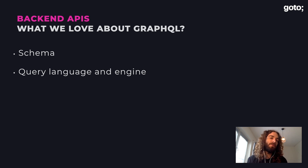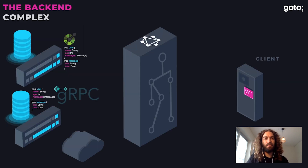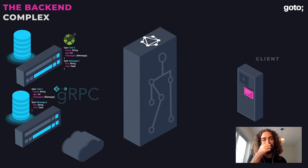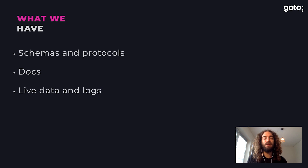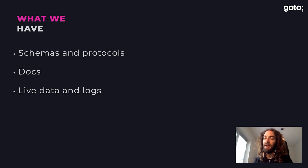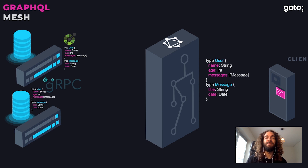We usually work with enterprise companies that have a lot of existing infrastructure — services already running their own protocols like OpenAPI and Swagger, or gRPC. So we thought: can we take the existing schemas and protocols — and if they don't have schemas, maybe use just the docs, or even the live data from those running services — and generate from that what we actually want?